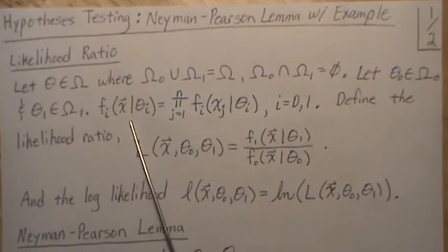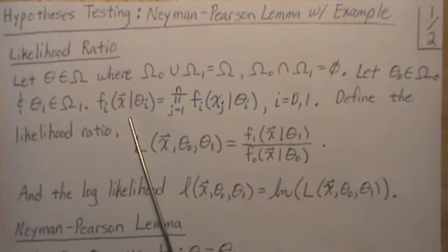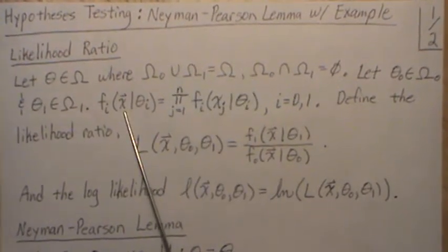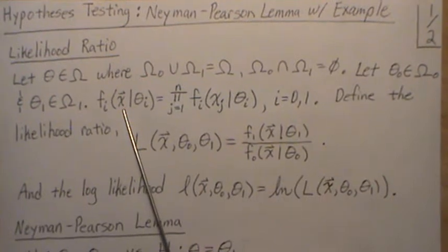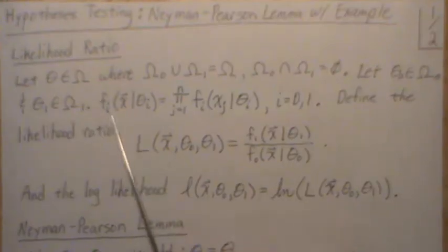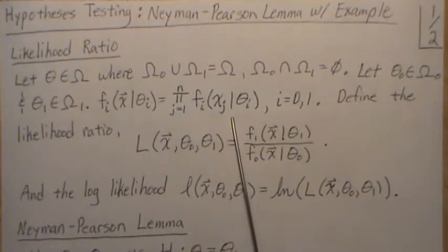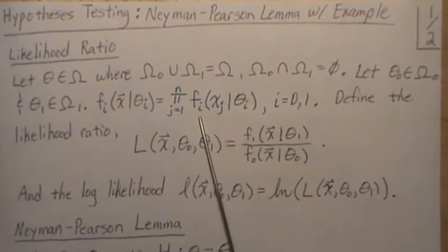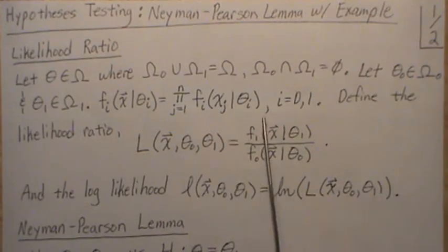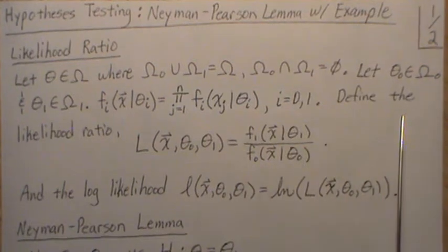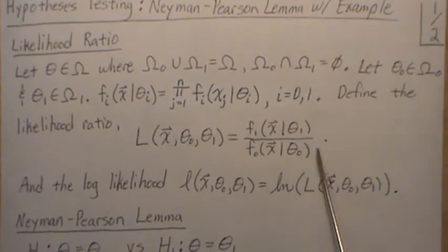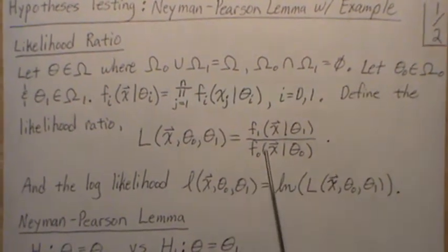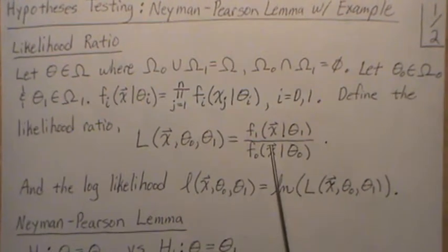Then the joint density or joint probability mass function, depending upon whether X is discrete or continuous, is the product of those individual functions over our sample. And so we define the likelihood ratio as the ratio of these two joint densities.